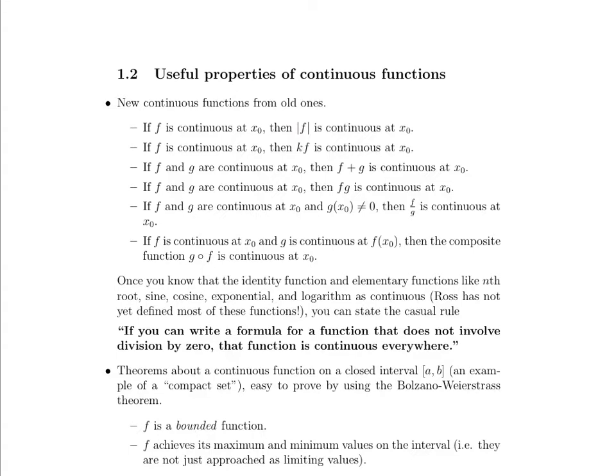If f is continuous at x0, then any scalar multiple of that function is also continuous at x0. If we have two functions, f and g, that are both continuous at x0, then the sum of the functions is continuous at x0 as well.